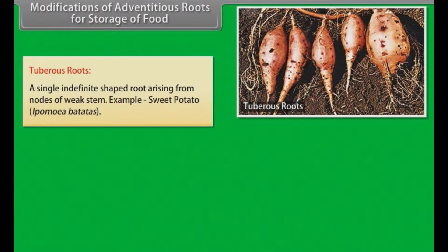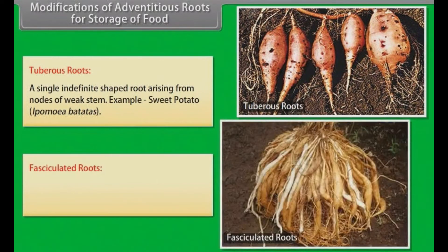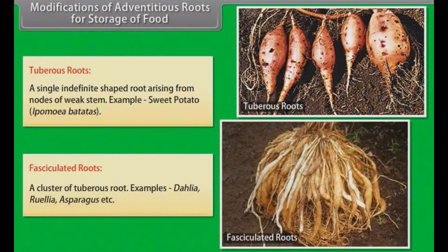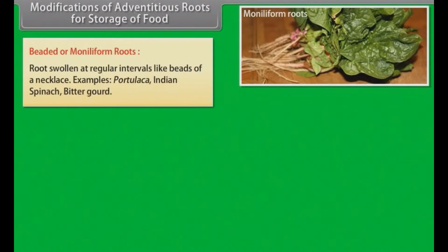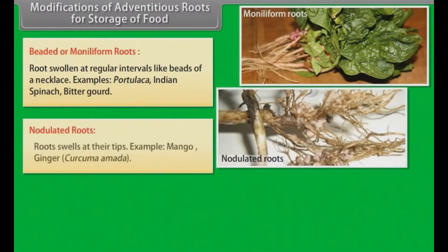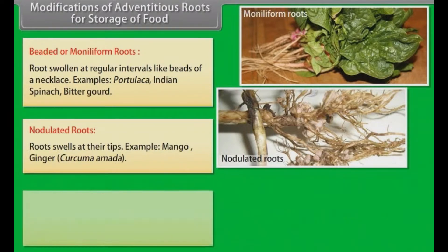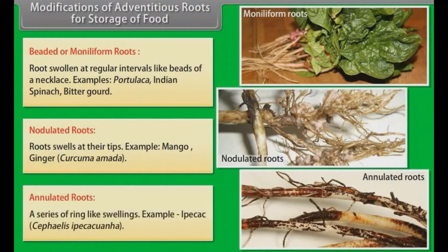Example: sweet potato. Fasciculated roots: A cluster of tuberous roots. Examples: dahlia, Rauvolfia, asparagus, etc. Beaded or moniliform roots: Roots swollen at regular intervals like beads of a necklace. Examples: Portulaca, Indian spinach, bitter gourd. Nodulated roots: Roots swell at their tips. Example: mango ginger. Annulated roots: A series of ring-like swellings. Example: ipecac.